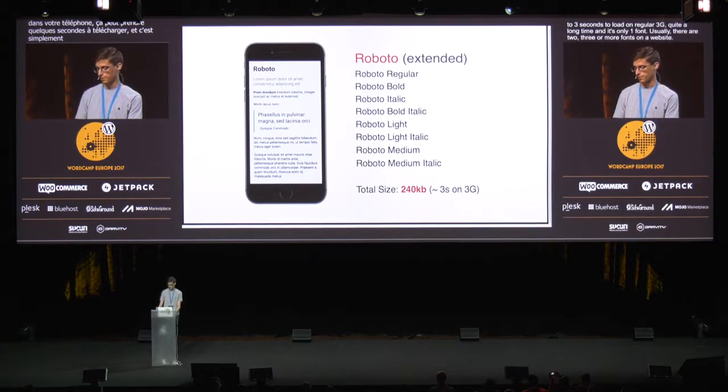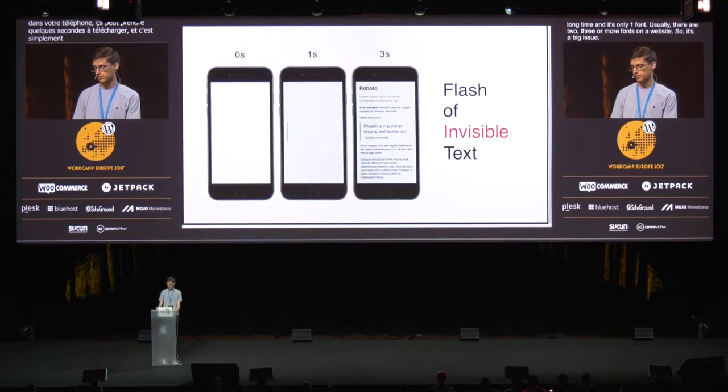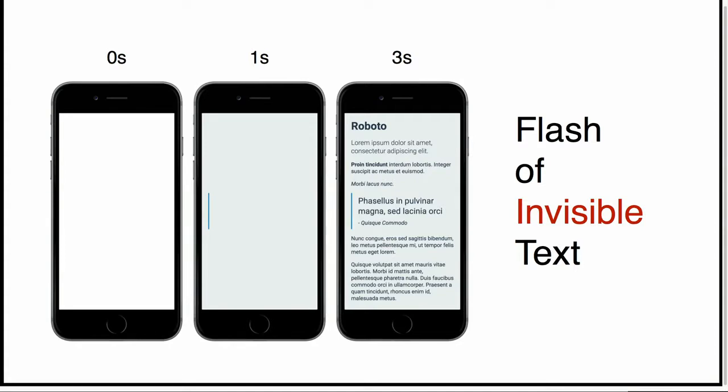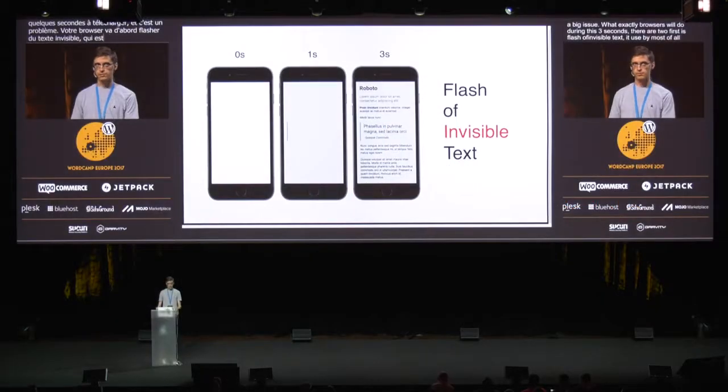So it's a big issue. What will browsers actually do during these three seconds? There are two algorithms. The first is a flash of invisible text. It's used by most popular browsers. The idea is that the browser makes text invisible while the font is loading. So even if your site is very light and optimized, your users will not be able to see content for a few seconds or more. As you can see on the screen, content is loaded in one second, but we can't see it. And it's not the best user experience.